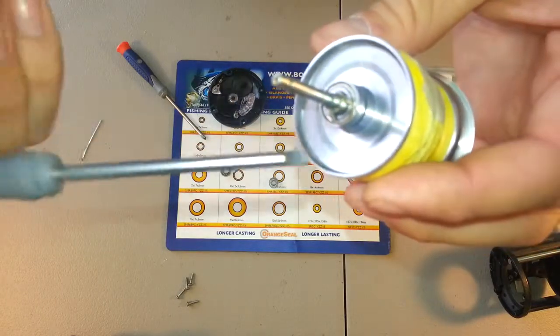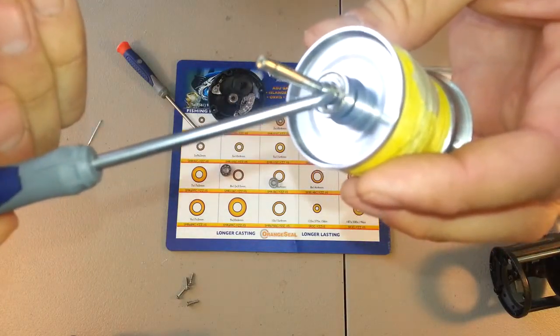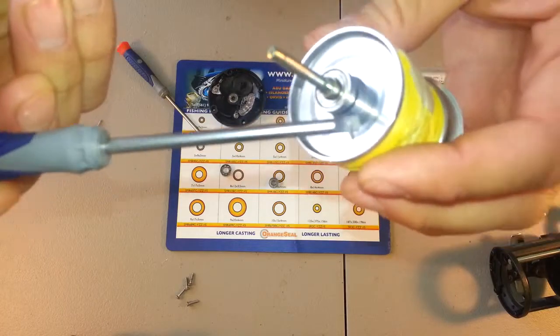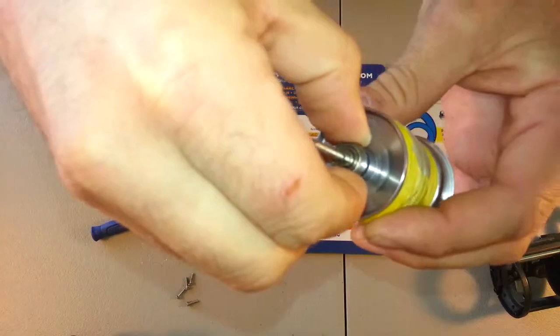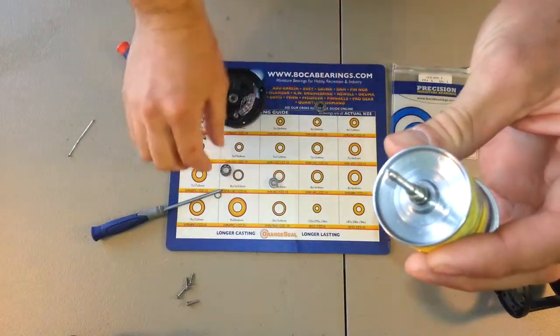On this side of the spool, there'll be a little C-clip that you'll have to pull out to get the bearing off. Screwdriver will pop it right out. Bearing just comes right off the spool shaft.